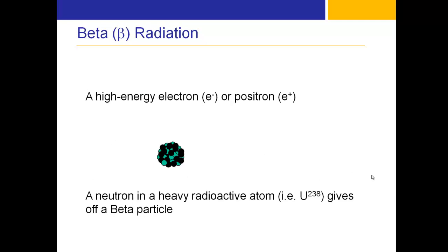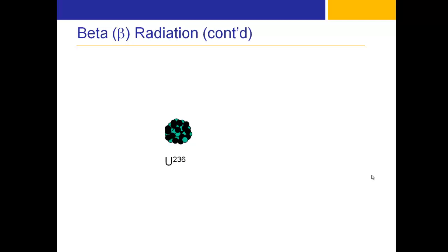Beta radiation is a high-energy electron or positron emitted from the nucleus of an atom. In this example, uranium-236 gives off a beta-minus particle and decays into neptunium-237. It's called decay, even though the atomic number goes up.